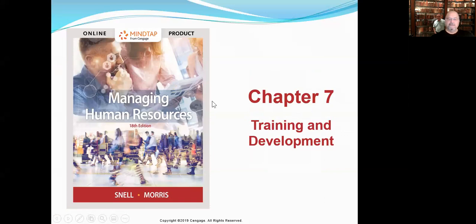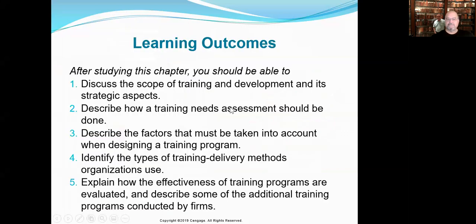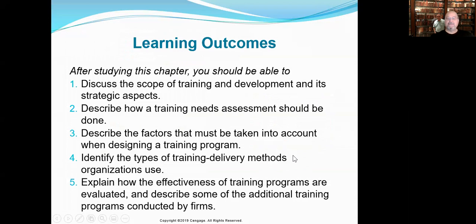Training and developing the people within our organizations. Learning outcomes: Number one, discuss the scope of training and development and its strategic aspects. Number two, describe how training needs assessments should be conducted. Thirdly, describe the factors that must be taken into account when designing a training program. Fourthly, identify the types of delivery methods that organizations use for their training. And fifthly, explain how the effectiveness of training programs are evaluated and describe some of the additional training programs that different organizations use.